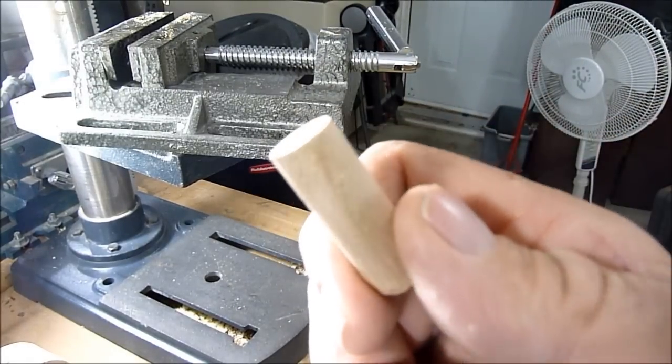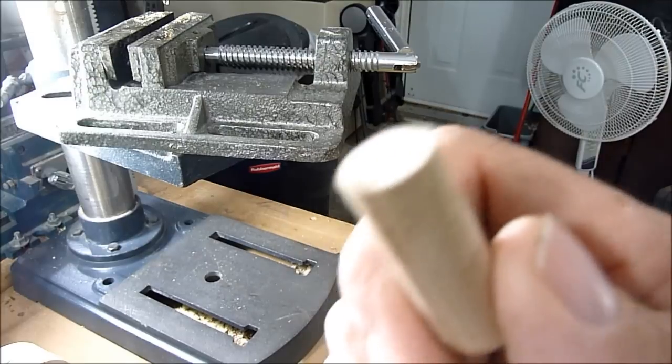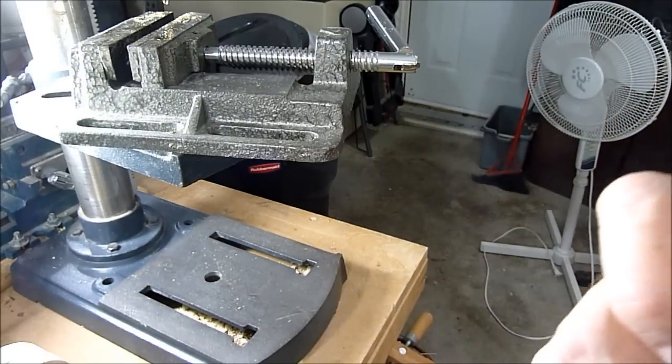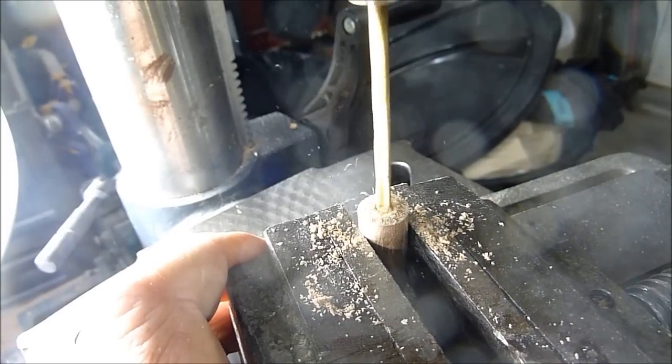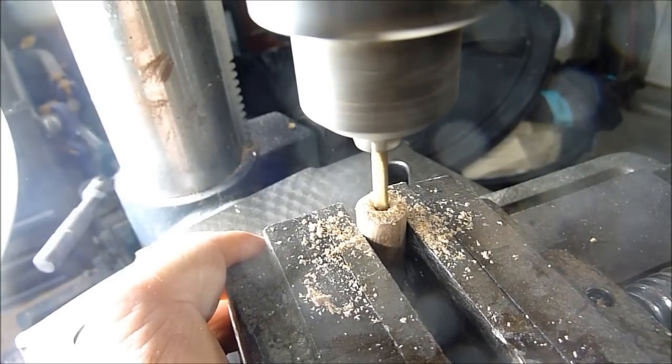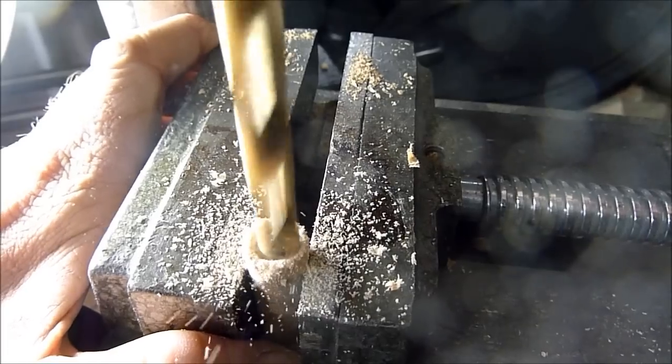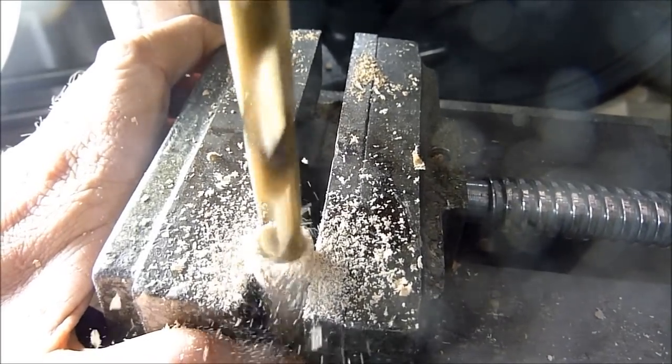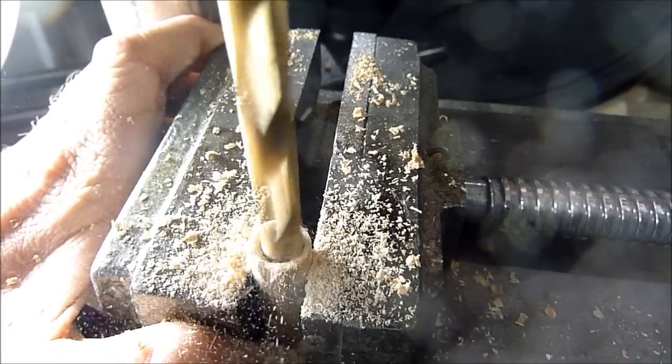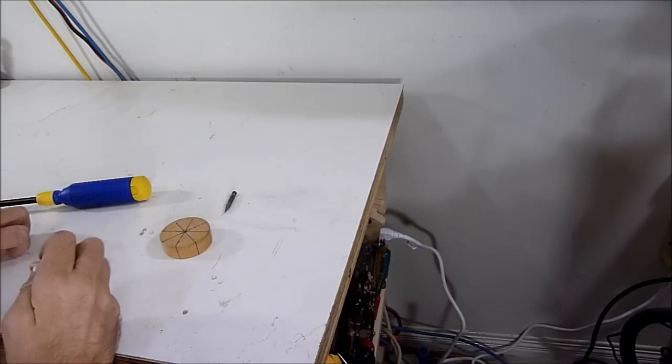To make the small handle, I'll just take a piece of dowel and drill a hole down the middle so I can put the handle on now.